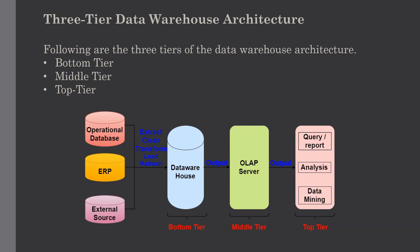Generally, a data warehouse adopts a three-tier architecture. The three tiers are: the bottom tier, the middle tier, and the top tier. The bottom tier of the architecture is the data warehouse database server — the hardware required to operate the data warehouse. It is a relational database system.